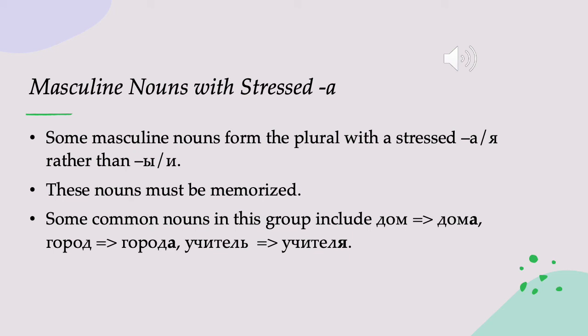Some masculine nouns — not a huge number, but some that are very important — form the plural by adding a stressed А or occasionally ЯЯ rather than Ы or И. You can't know these nouns by looking at them; you just have to memorize them. The textbook has a list of some common ones. Others include dom, house, which becomes doma, houses. Gorod, city, becomes goroda, cities. Uchitel, a male teacher, becomes uchitelya, male teachers.